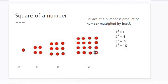So square of a number is product of a number multiplied by itself. So what we have done: 1 multiply 1 is equal to 1, so what we say? We say square of 1 is 1. 2 multiply 2 is 4, we say square of 2 is 4.